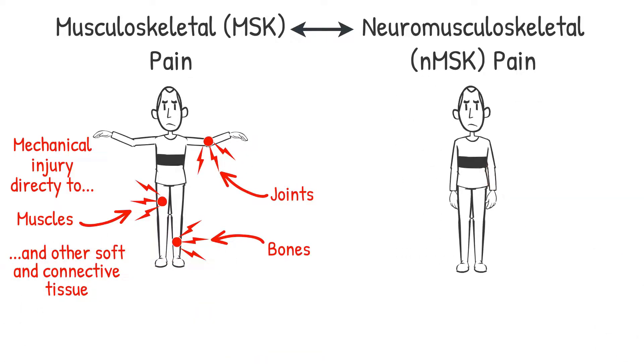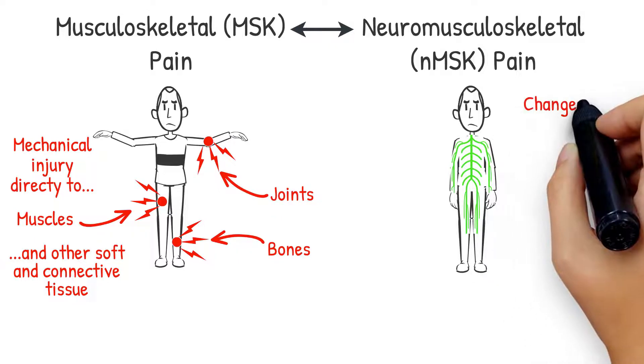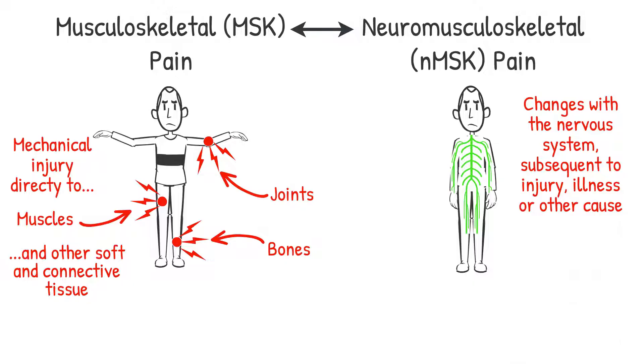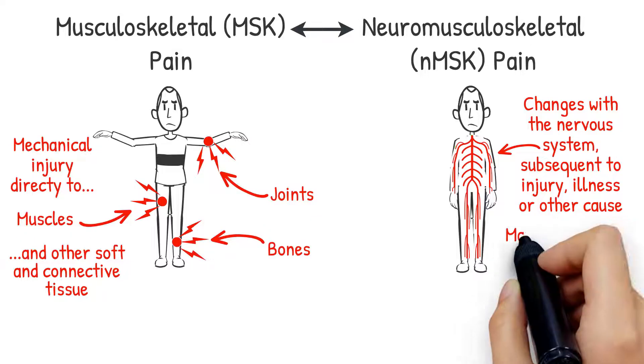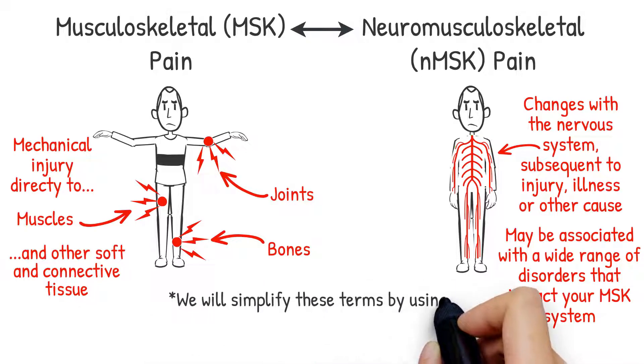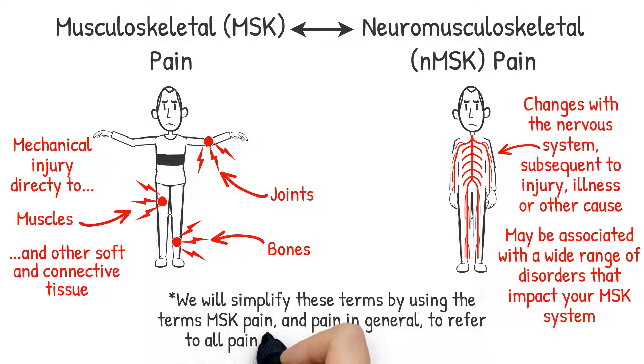Meanwhile, neuromusculoskeletal pain specifically involves changes with the nervous system subsequent to an injury, illness, or other causes that result in pain being felt within muscles and bones. Neuromusculoskeletal pain may be associated with a wide range of disorders that impact your musculoskeletal system. For the purposes of this video, we'll simplify these terms by using musculoskeletal pain and pain in general to refer to all forms of pain felt within the musculoskeletal system.